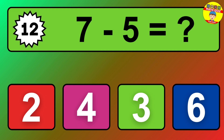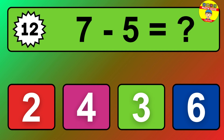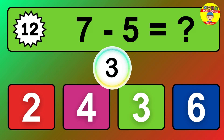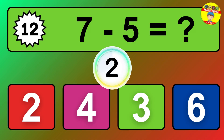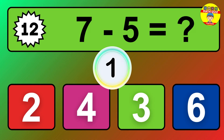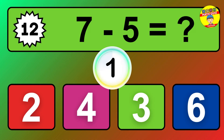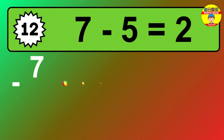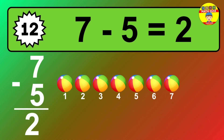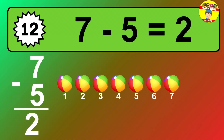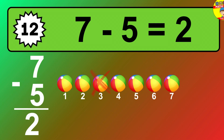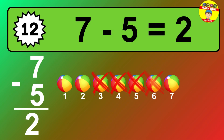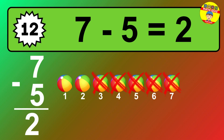Question twelve: seven minus five equals what? So the answer is seven minus five is two. Let's count it: one, two.